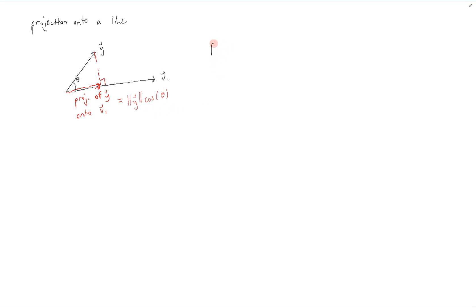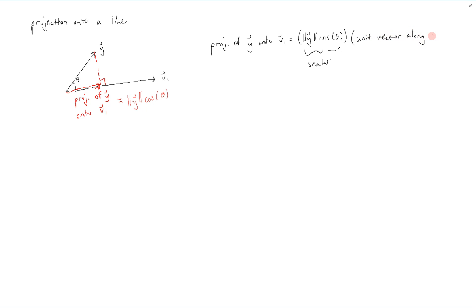The projection of y onto v1 is equal to the length of y times the cosine of theta. This is a scalar — it is the length of the projection. We then multiply by a unit vector along v1 to give it a direction. So the projection is the length of the projection times a unit vector along v1, which equals the length of y times cosine of theta times v1 divided by the length of v1.